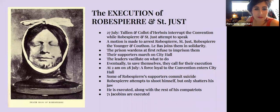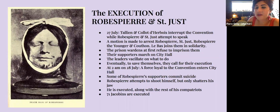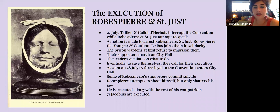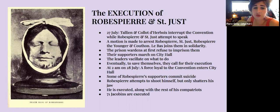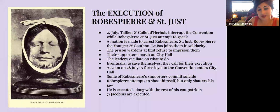The two men Robespierre referred to feared they would be executed and conspired with the Marsh to plan a counterattack. On July 27th, Tallien and Collot d'Herbois interrupted the convention while Robespierre and Saint-Just attempted to speak, and made a motion to arrest them. The prison wardens refused at first, and supporters marched on City Hall. But ultimately, the leaders decided they needed to execute Robespierre and his comrades to save themselves. At 2 a.m. on the 28th of July, a force loyal to the convention entered City Hall. Some of Robespierre's supporters committed suicide; Robespierre tried to shoot himself but only shattered his jaw. He was then executed along with his compatriots — in the end, 71 Jacobins were executed.